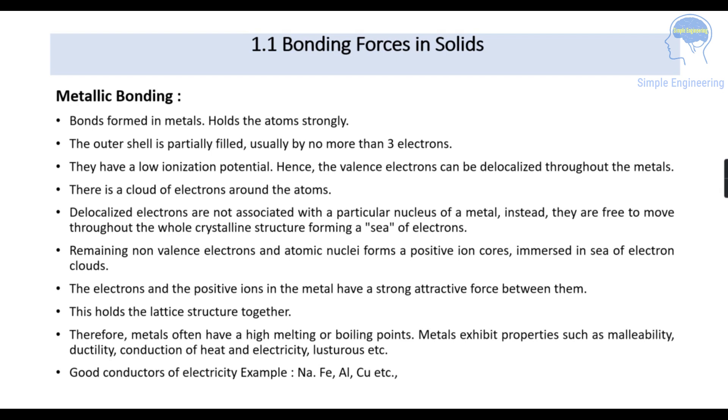They are free to move throughout the whole crystalline structure forming a sea of electrons. For metallic bonding it has a sea of electrons because all the electrons are free to move throughout the whole crystal structure. Remaining non-valence electrons and atomic nuclei form a positive ion core and are immersed in a sea of electron clouds. The electrons and the positive ions in the metal have a strong attractive force between them. This holds the lattice structure together.